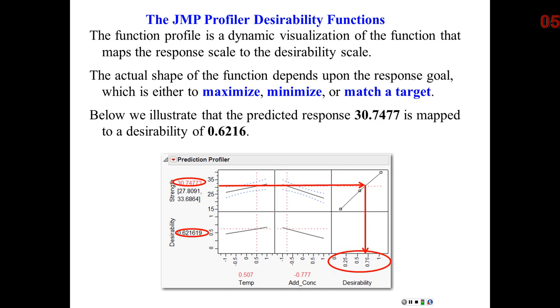Desirability is basically determined by the objectives of the analyst. Basically, what's happening internally in the software, there is a mathematical function that maps the response, so here strength, to a dimensionless scale of 0 to 1.